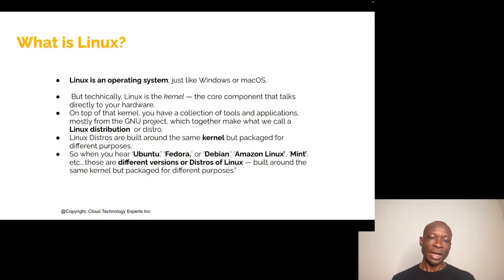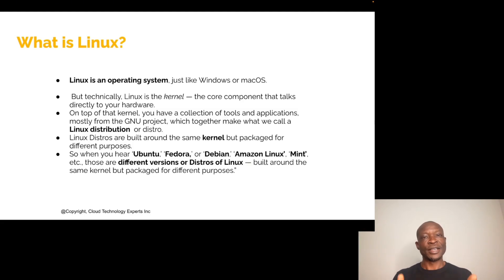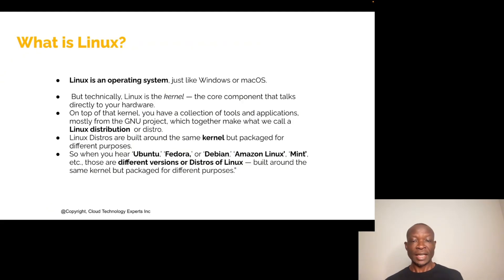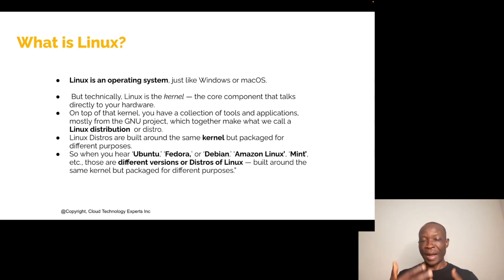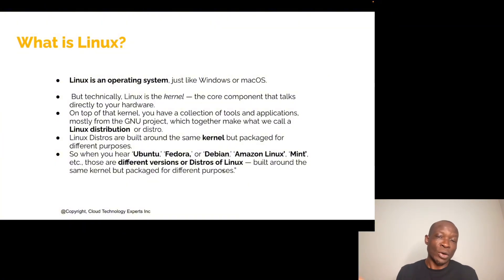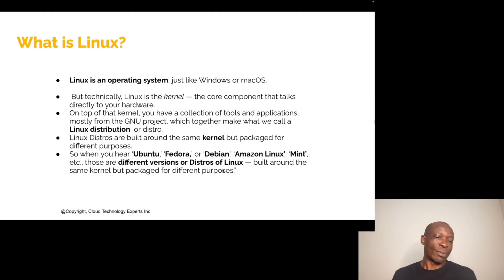We also have something called Linux distributions, or Linux distros. These are built around the kernel but packaged for different use cases and communities. You may have heard of Ubuntu, Fedora, Debian, Amazon Linux, Mint, and others. In fact, there are over 100 different distributions of Linux, and all of them use the same kernel — but the packages on top, how they're customized, and their security posture can all be different.